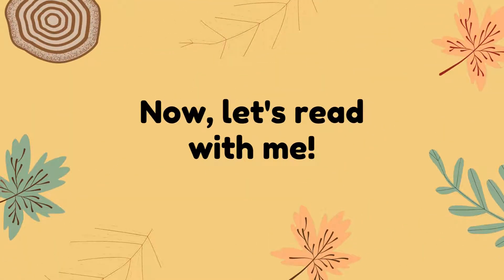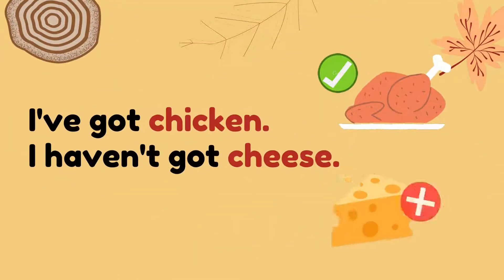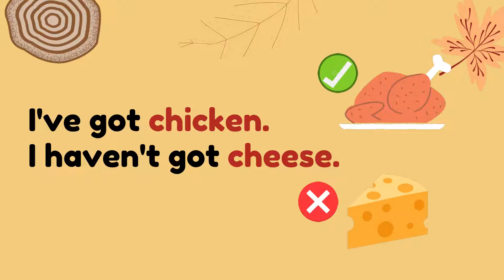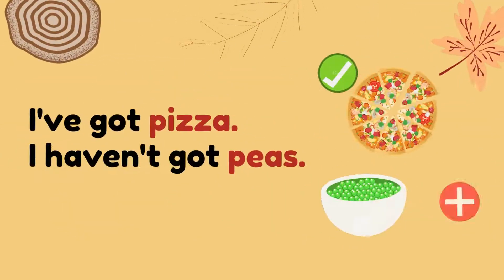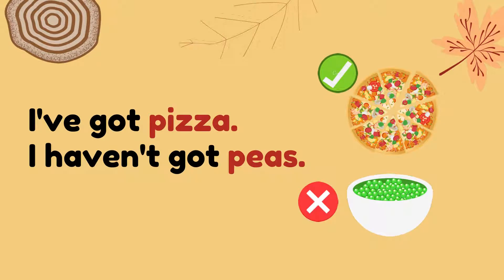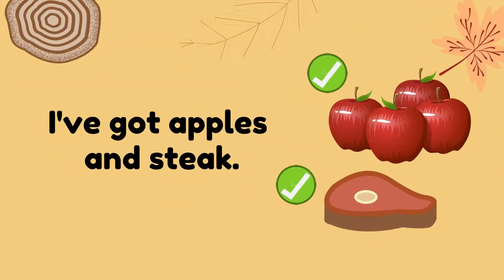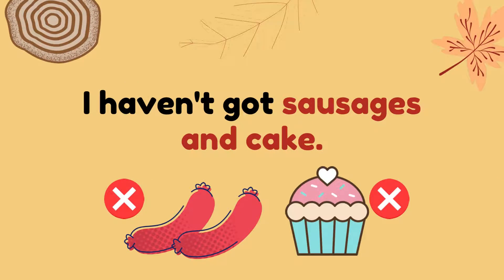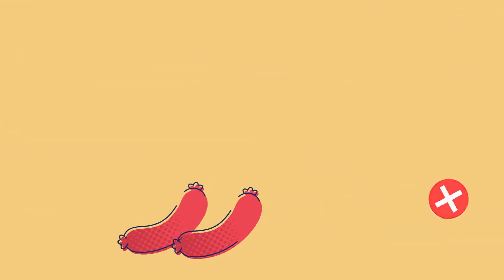Now, let's read with me — repeat after me. I've got chicken. I haven't got cheese. I've got pizza. I haven't got peas. I haven't got eggs. I haven't got pickles and steak. I haven't got sausages and cake.